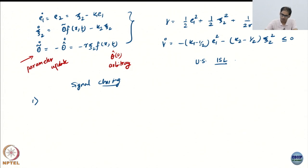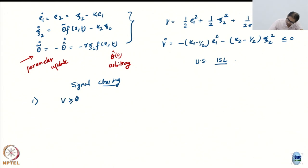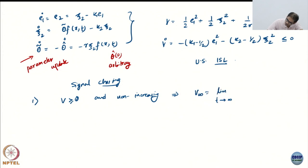The first step in proving everything in V-dot goes to 0: you say that V is lower bounded and non-increasing. From this, I know V-infinity — which is basically the limit as t goes to infinity of V(t) — exists and is finite.